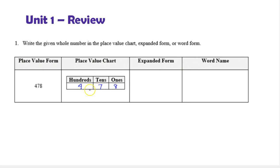To write this in expanded form, we're going to write what each digit represents in terms of its place value. So 4 hundreds is 400, plus 7 tens is 70, plus 8 ones is 8. The expanded form, if we combine these values, is equivalent to the place value form.